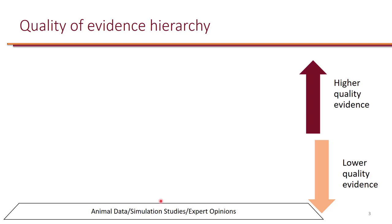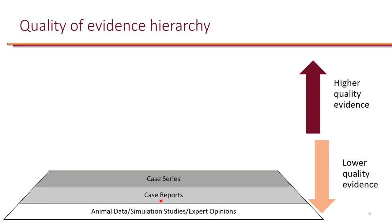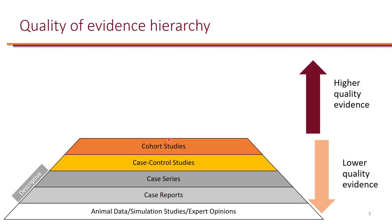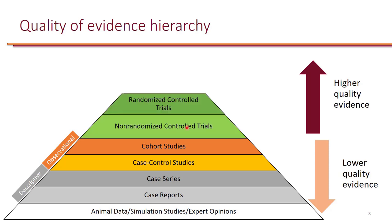Higher in the pyramid, we have case reports and case series, and these are descriptive studies. Slightly higher quality than this, we have case control studies and cohort studies, which are observational studies. And then we have very high quality evidence from control trials — non-randomized control trials and randomized control trials — and these are extremely important because these are experimental studies.